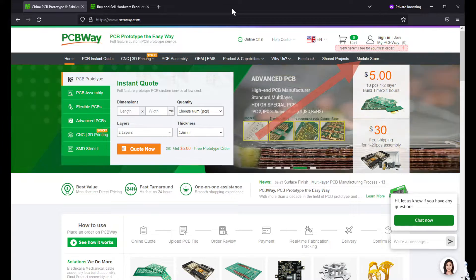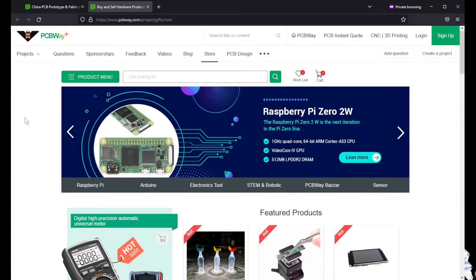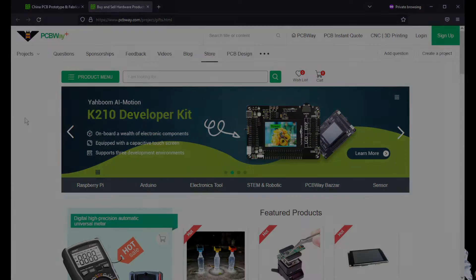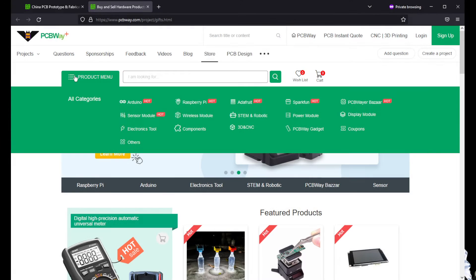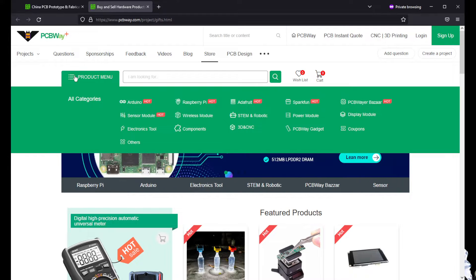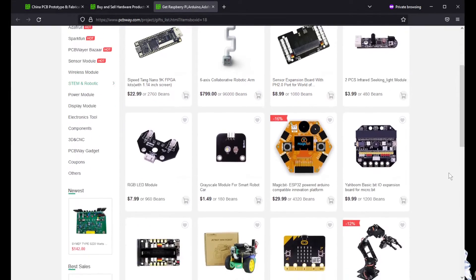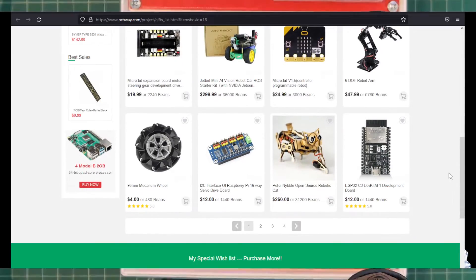PCBWay now has a storefront where you can get the parts and components that you need to complete your projects. At the PCBWay storefront you can find the parts you need. Click on the product menu and you can see various manufacturers that partner with PCBWay. If you're having trouble finding the component you need for your project, check out PCBWay.com.